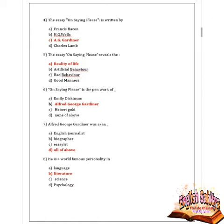Next question: the essay On Saying Please reveals what? Options are reality of life, artificial behavior, bad behavior, and good manners. Correct option A — reality of life. Next question: On Saying Please is the pen work of whom? Options are Emily Dickinson, Alfred George Gardiner, Herbert Gold, none of the above. Option B is correct — Alfred George Gardiner.